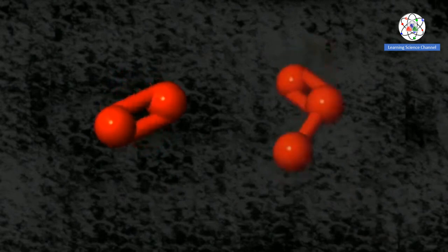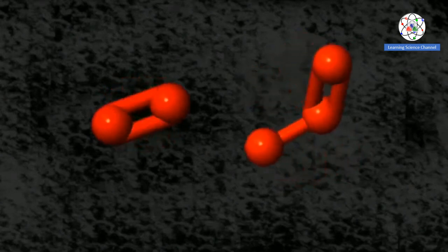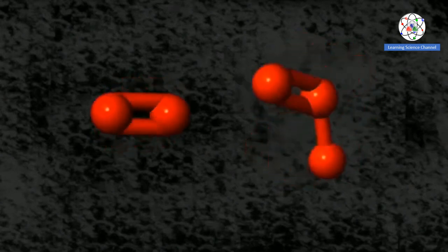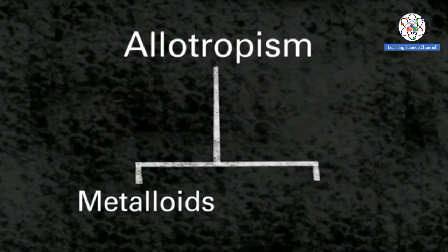For example, oxygen can exist as diatomic oxygen or as ozone. These molecules are made exclusively of oxygen atoms, though their structures and properties are very different from one another. This allotropism can also exist in certain metalloids and metals.